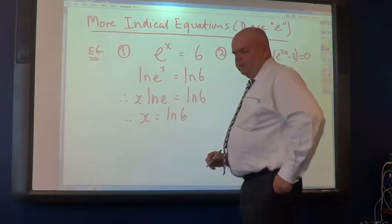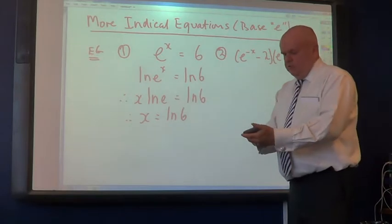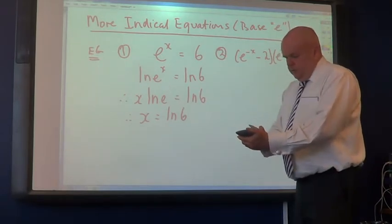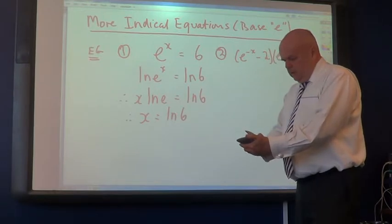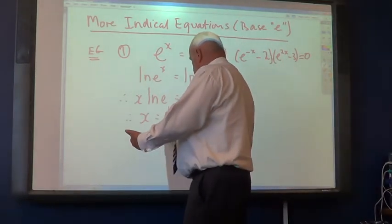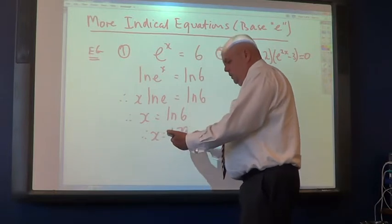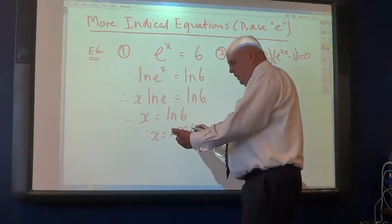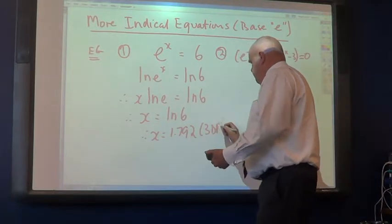So we can conclude from that, that x is equal to ln 6. Now, if we need a numeric approximation of that, we simply press the natural log key. Remember, your textbook's going to call it log base E. I call it ln 6 is equal to 1.792, to three decimal places.